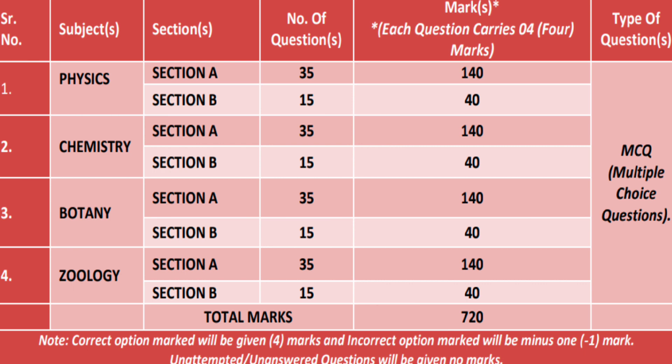What are the subjects? Physics, Chemistry, and Biology — which includes Botany and Zoology. Each subject has two sections: Section A and Section B. Section A has 35 compulsory questions worth 140 marks. Section B has 15 questions. What is the marking scheme? Each correct answer is 4 marks, and each incorrect answer is minus 1 — so there is negative marking in NEET-UG.